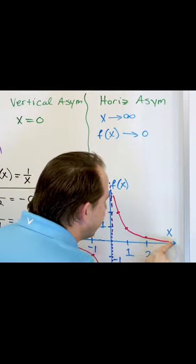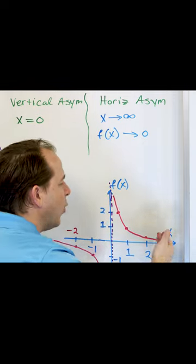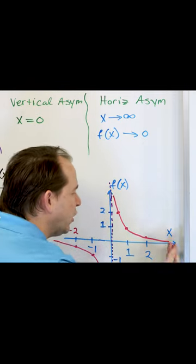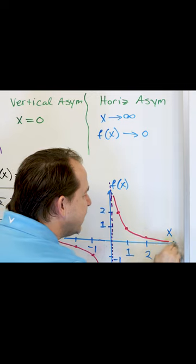As the value of x gets bigger and bigger - 1 over 100, 1 over 1000, 1 over 10 million, 1 over 20 million - this graph gets infinitely close.